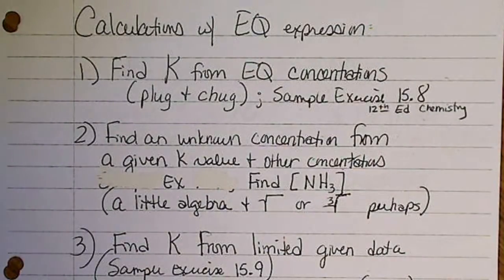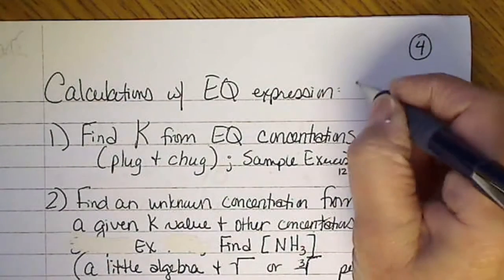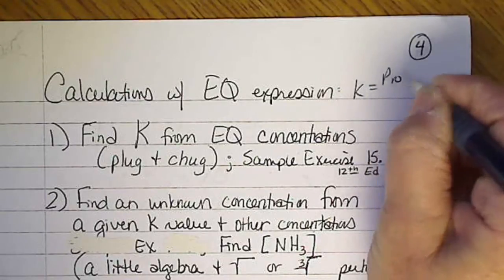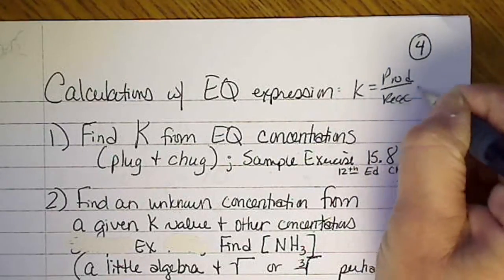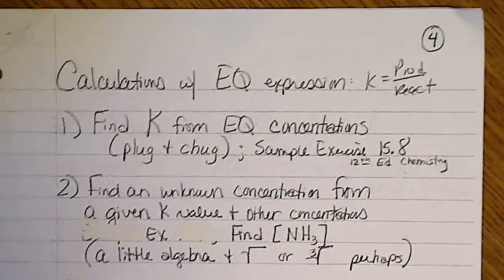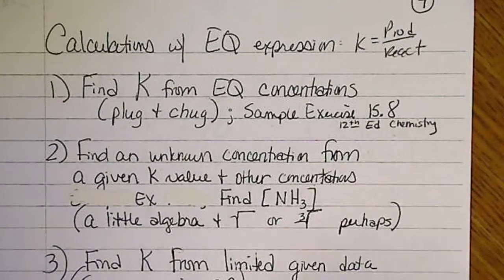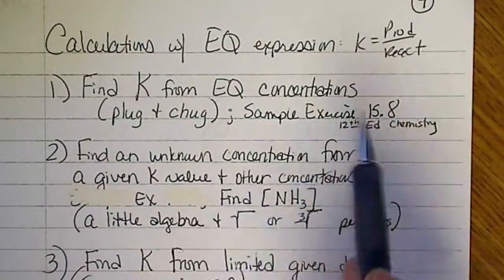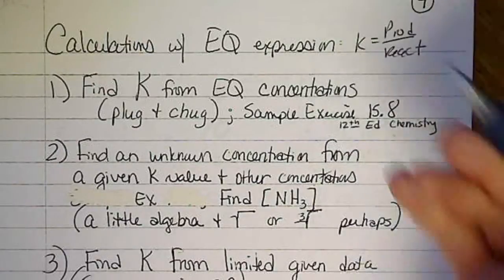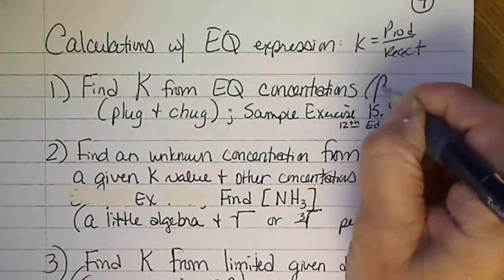There are a variety of calculations that we are going to look at involving the equilibrium expression K. Remember that's K equals products over reactants. So the easiest thing to do is just solve for K when we're given either equilibrium concentrations or pressures.